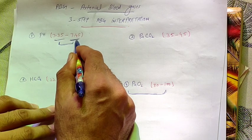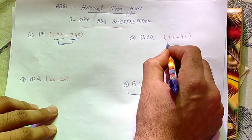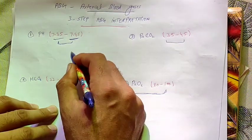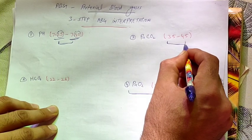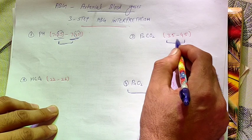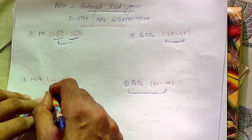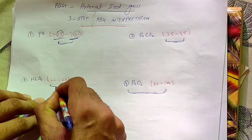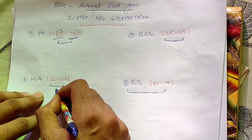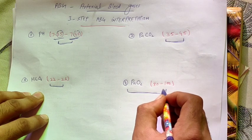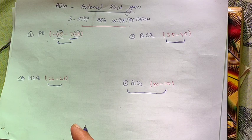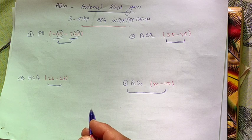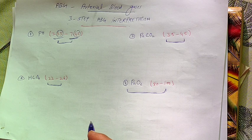The normal range of pH is 7.35 to 7.45. The normal value of pCO2 is 35 to 45 — you can remember it easily because it mirrors the pH range: 7.35 up to 7.45, just take those digits. For HCO3 (bicarbonate), the normal value is 22 to 26 — there's no shortcut, you'll have to memorize that. The normal value of partial pressure of oxygen (PaO2) is 80 to 100.